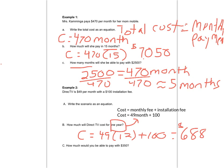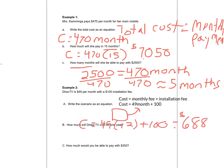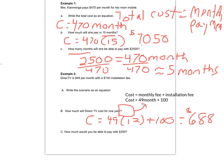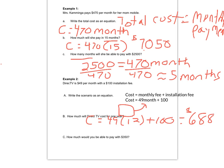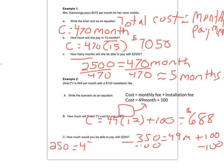How many months would you be able to pay with $350? This is a total cost, so I have $350 equals 49 times months plus $100. First I'll subtract 100, so I have 250 equals 49 months. Divide by 49 — 250 divided by 49 is roughly 5 months. I end up with 5.10, so I'd only be able to pay my bill for 5 months with $350.